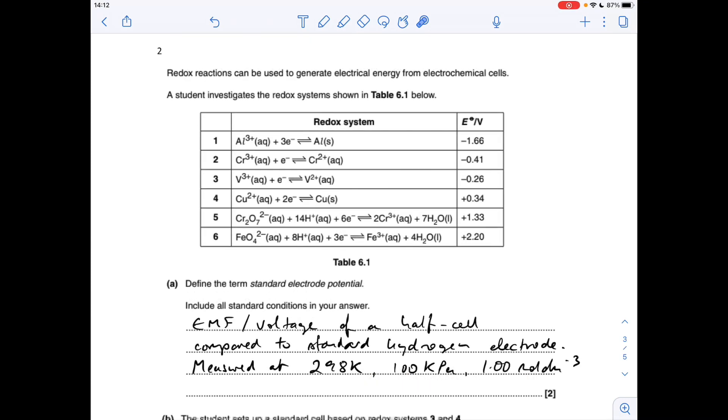Question 2 now. The first part is the definition. Standard electrode potential is the EMF, electromotive force or voltage of a half cell, compared to the standard hydrogen electrode. The standard conditions we've already seen: 298 Kelvin, 100 kilopascals of pressure, 101 kilopascals is OK, in solutions at 1 mole per decimetre cubed.